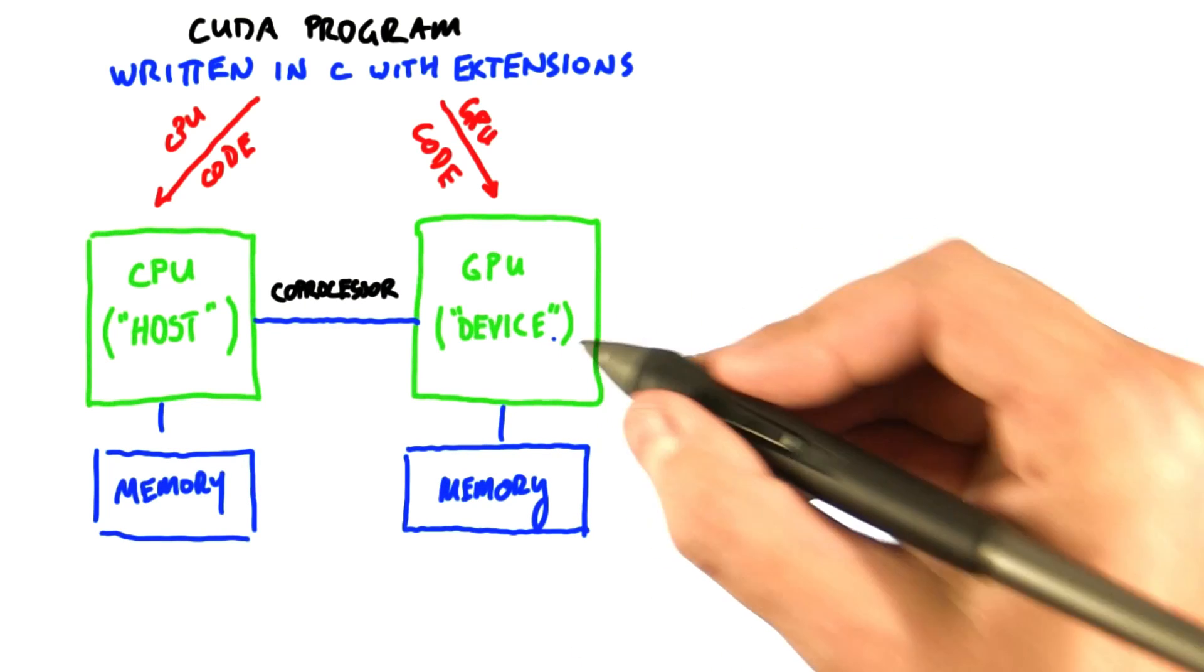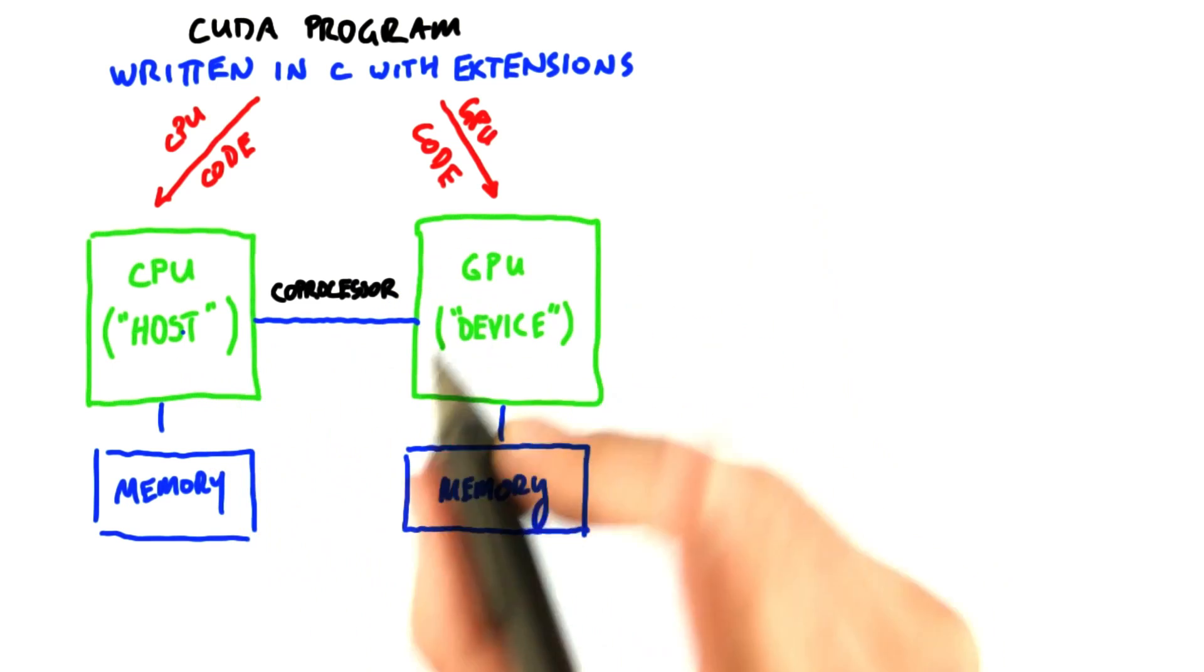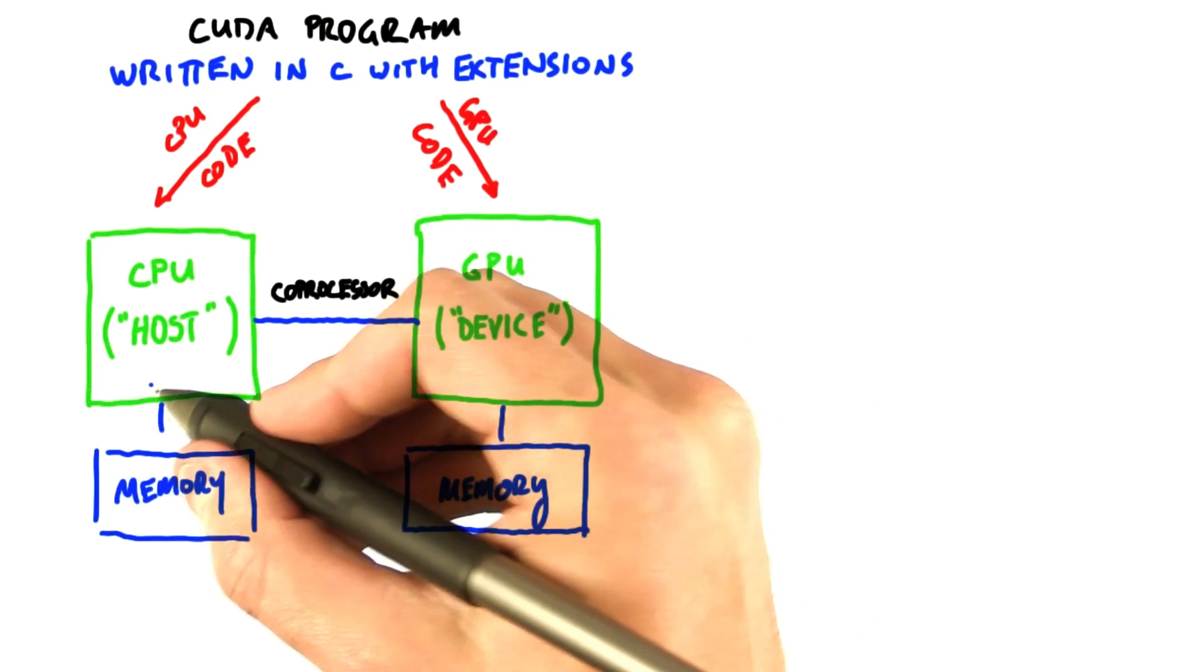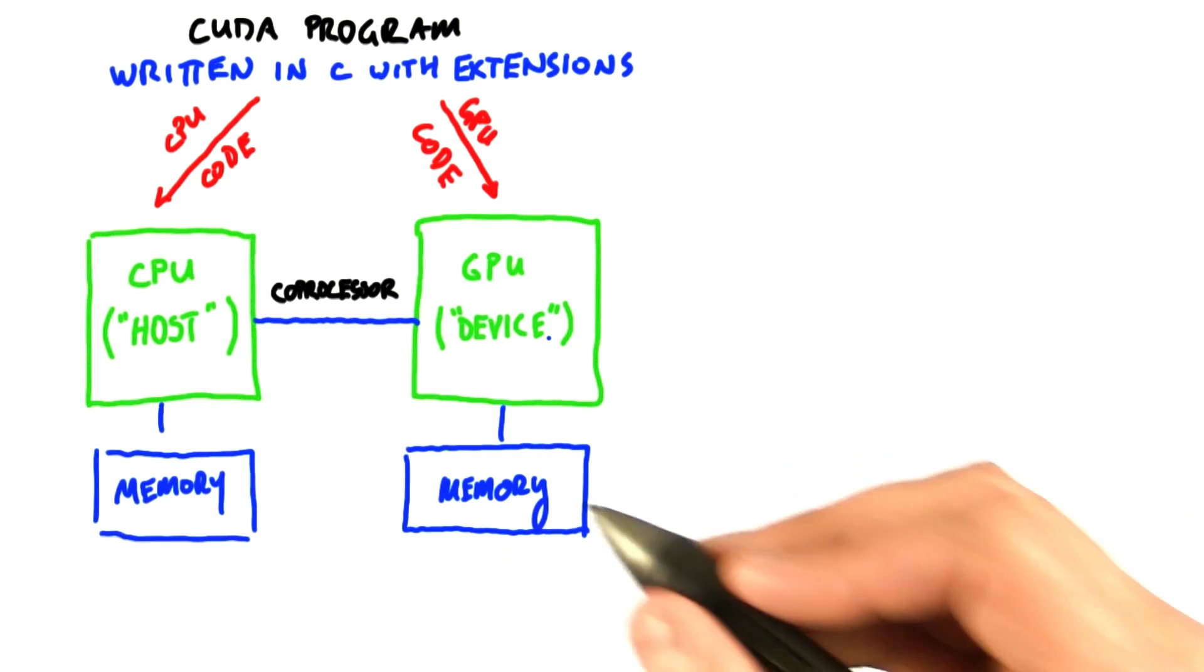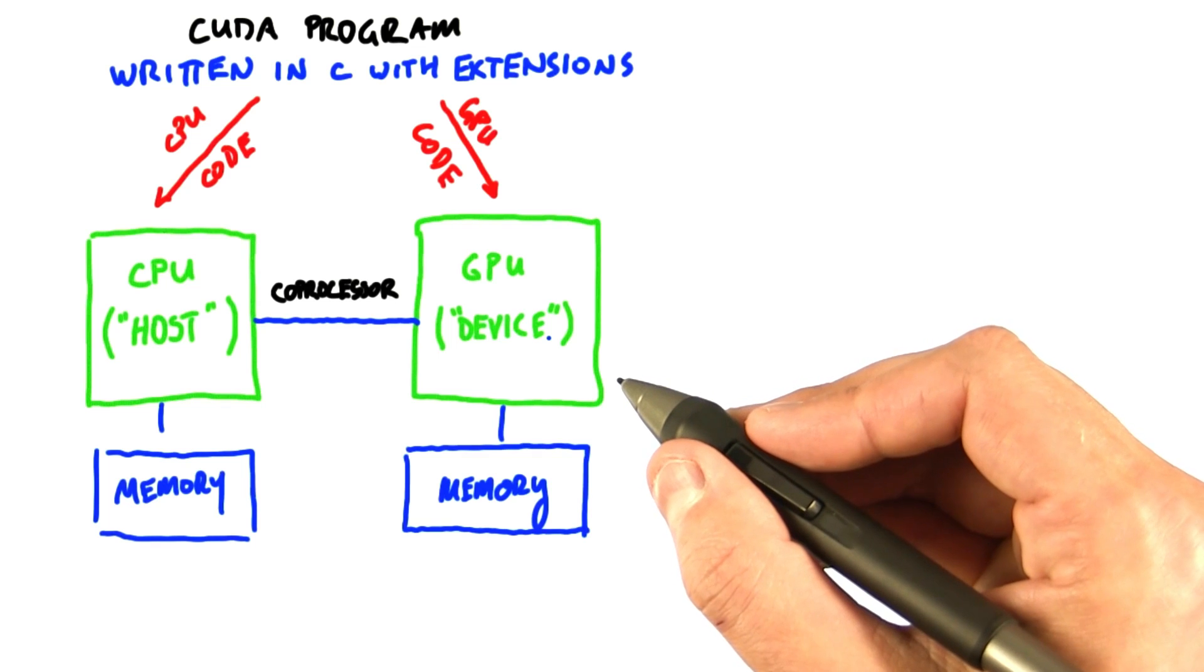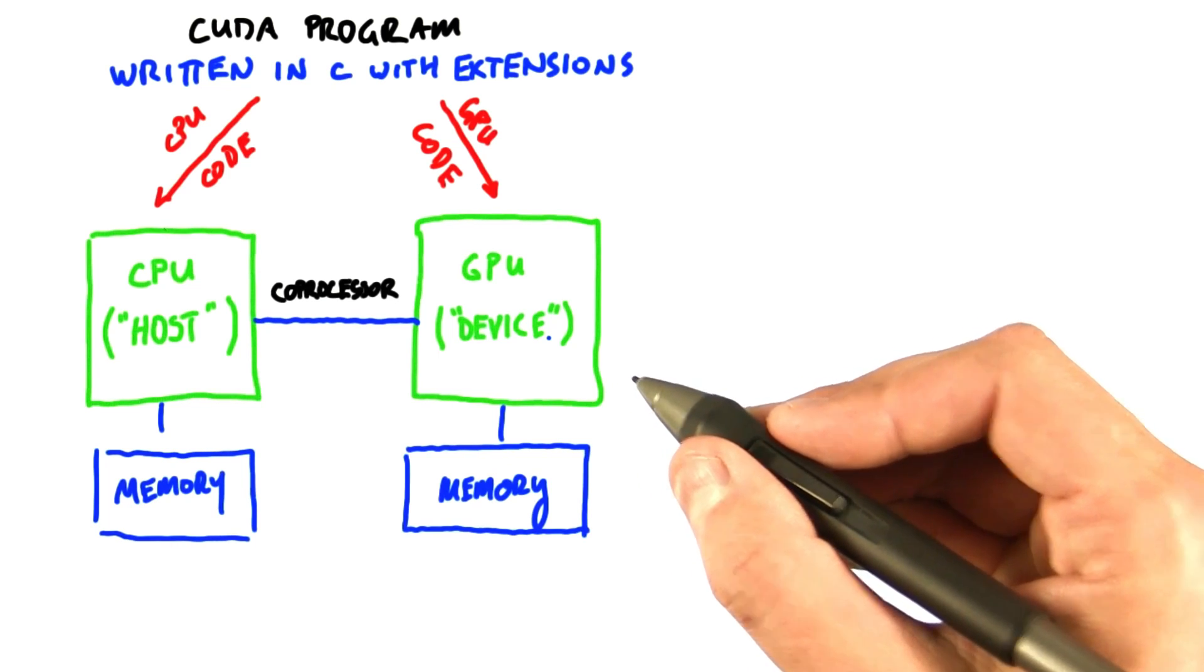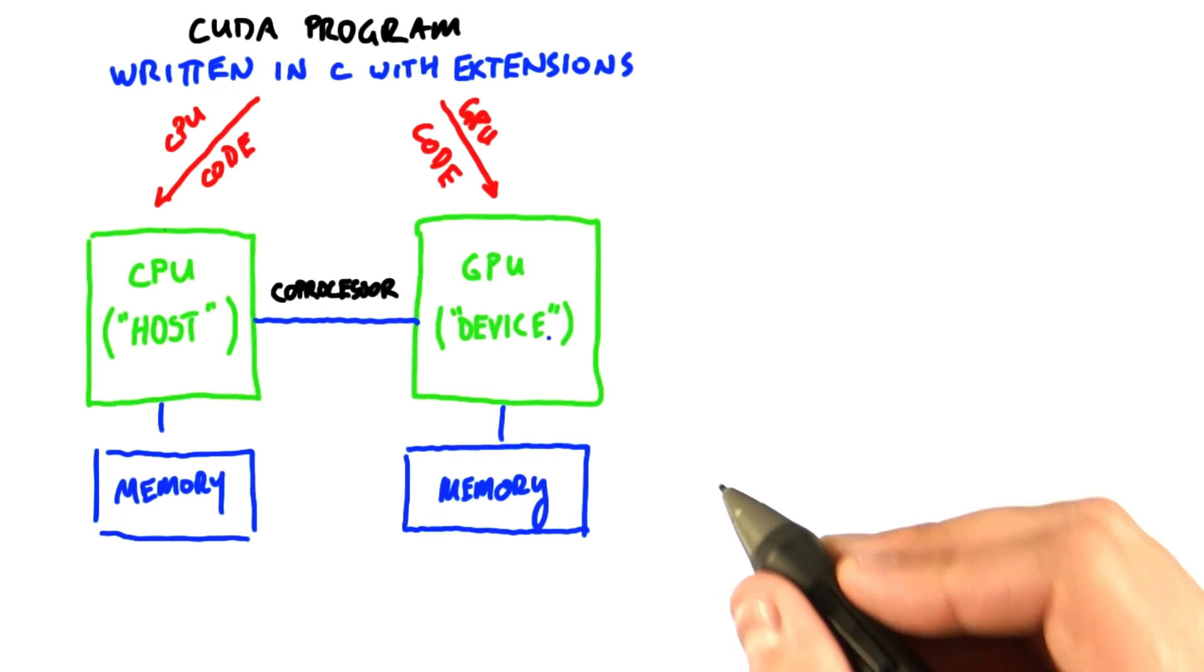CUDA assumes that the device (the GPU) is a coprocessor to the host (the CPU). It also assumes that both the host and device have their own separate memories where they store data. In the systems we use in this class, both the CPU and GPU have their own physical, dedicated memory in the form of DRAM, with the GPU's memory typically being a very high-performance block.